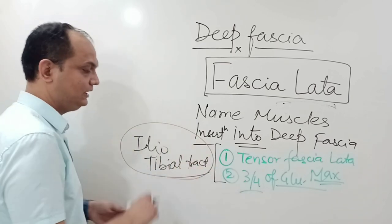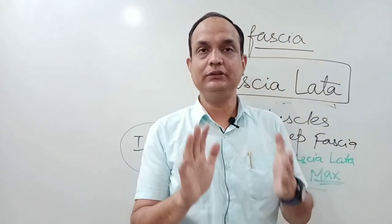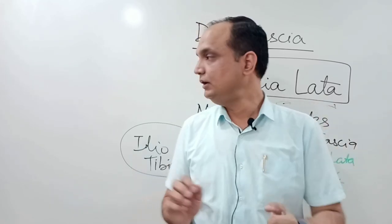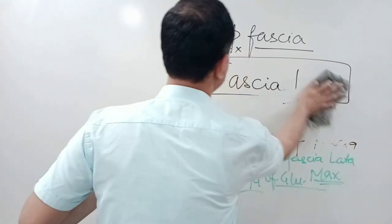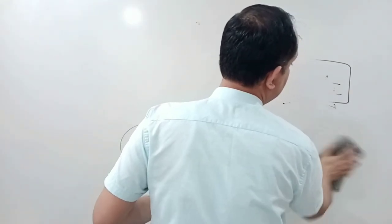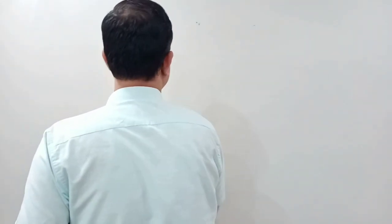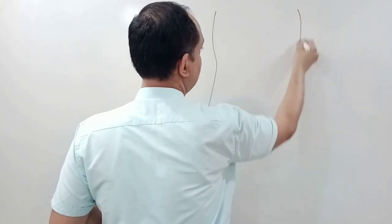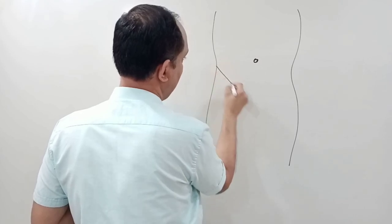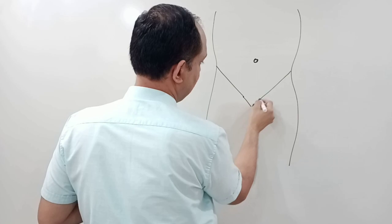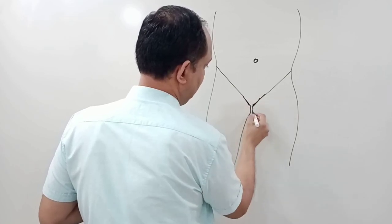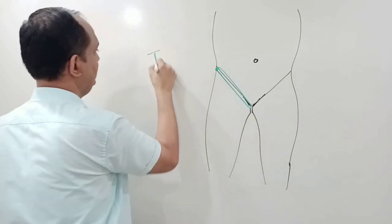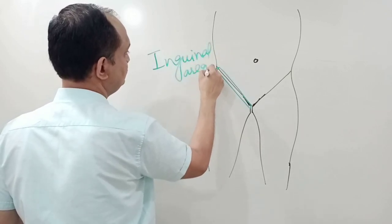This is a basic overview about the deep fascia of the thigh and its functions. Now regarding the deep fascia orientation, when we see the front and upper part of the thigh under this deep fascia, we realize there is a line of demarcation between the front of the thigh and the anterior abdominal part. This region is called the inguinal region, or the groin.